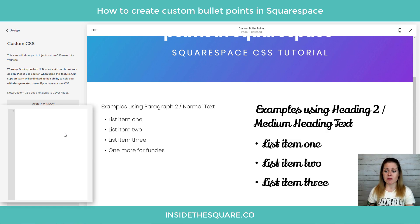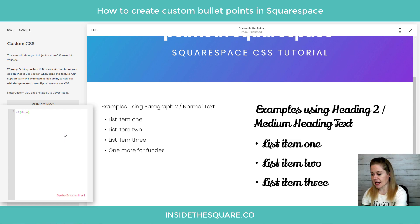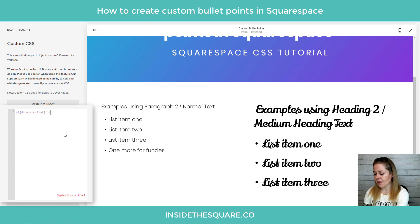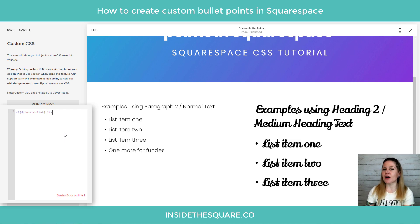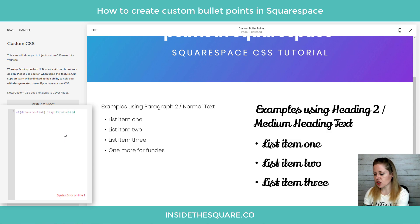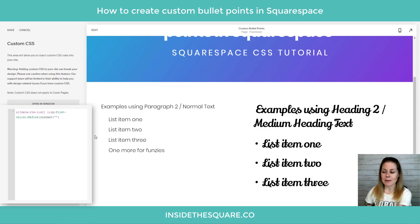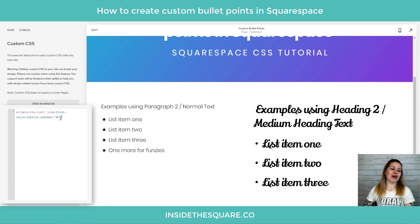The first part of this code is the same no matter what type of text you're editing. We're going to say ul, then open a square bracket and say data-rte-list, close that square bracket, then say li, add the greater-than symbol. This is where we add a letter to specify which type of text we're isolating — let's start with paragraph, so I'll add the letter p. Then say first-child::before and open a curly bracket. Here is where we're actually adding the content — I'll type the content property and put a Unicode character between quotation marks. Now I have fancy stars for all of my bullet points.